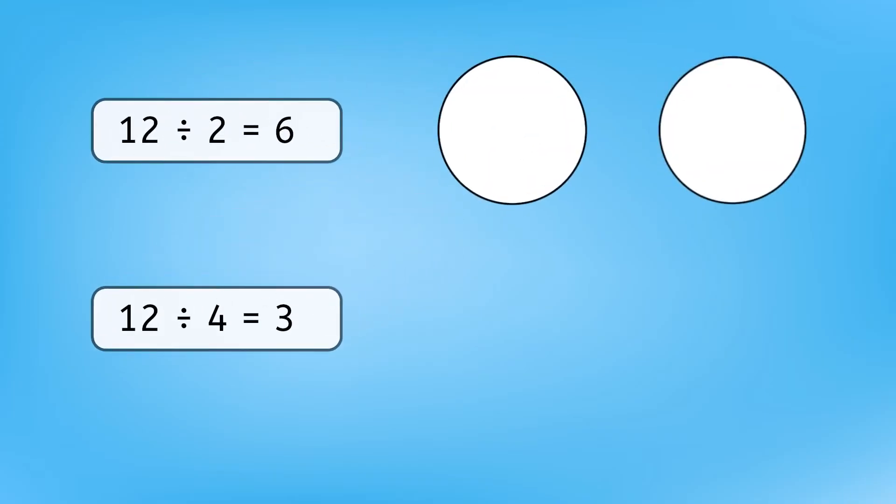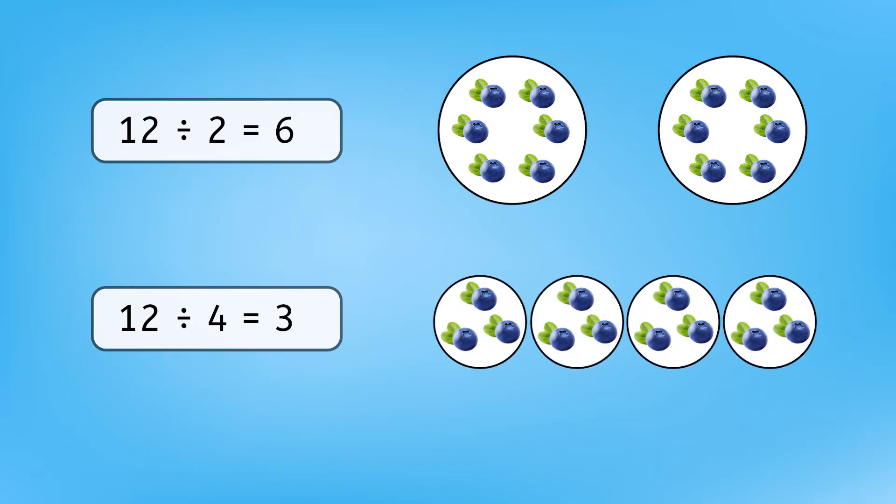When we divide by 2, like 12 divided by 2, we're splitting the dividend in half, equaling 6 in each group. And when we divide by 4, there are more groups, which makes the amount in each group even smaller. We could think of it as splitting the dividend in half, and then in half again. When we divide by 4, our answer is half as much as it is when we divide by 2.